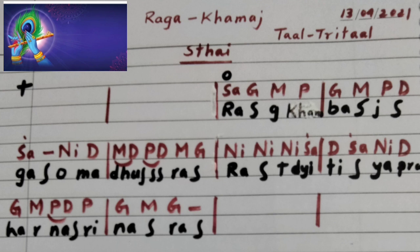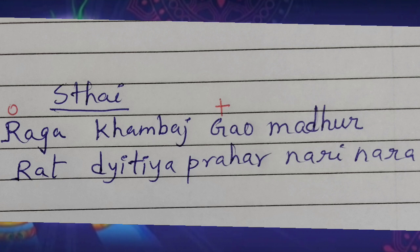So the knowledge of the Raga — everything is written in the Lakshman Gita. Sa Ga Ma Pa — Ga Ma Pa Dha — Sa Ni Dha — Ma Dha Pa Dha — Ma Ga — Ni Ni Ni Sa Dha — Sa Ni Dha — Ga Ma Pa Dha Pa — Ga Ma Ga. This is only the Sthai. Raga Kambhaja Ga O Madhura — Rata Ditya Pra Har Nari Nara — Raga Kambhaja Ga O Madhura — Rata Ditya Pra Har Nari Nara.